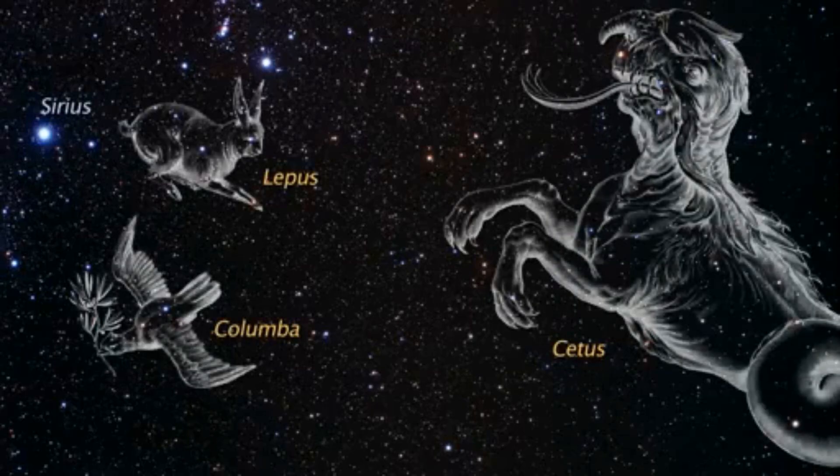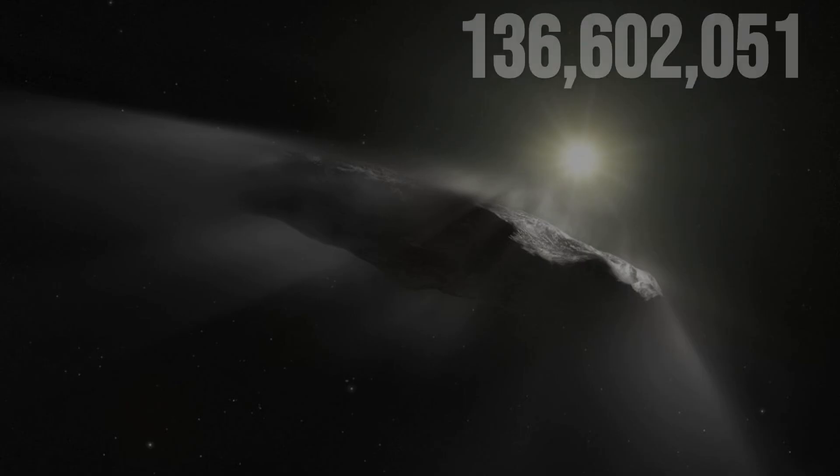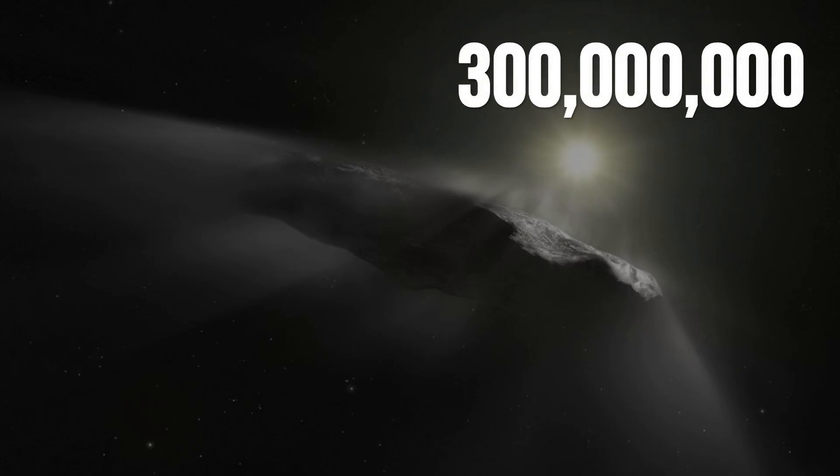3I/Atlas isn't just bigger and brighter than astronomers expected. It's changing fast, outshining models while still over 300 million kilometers from the sun.